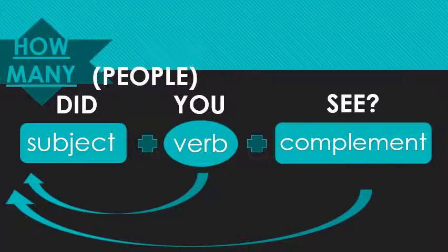If you use 'many' — how many — you're going to do the same thing, because 'many' is also an adjective. 'How many people did you see?' Or if it's understood from the conversation, 'How many did you see?' The noun is optional, but the important thing is that the adverb, the adjective, and if you use it, the noun, all need to go to the very front together. If you say 'How many did you see people?' it doesn't make sense. Don't forget to switch your verb and subject too.